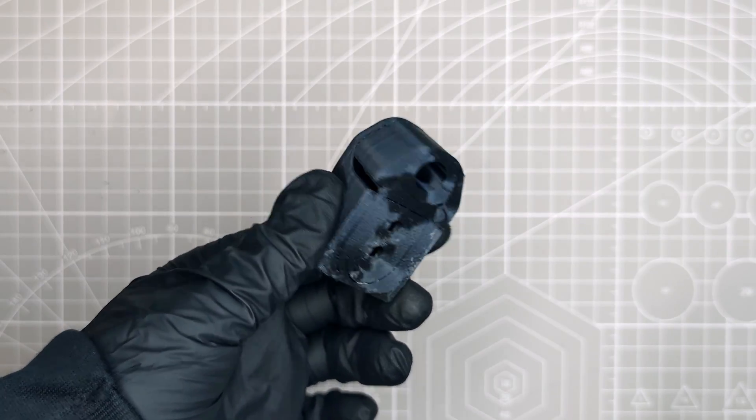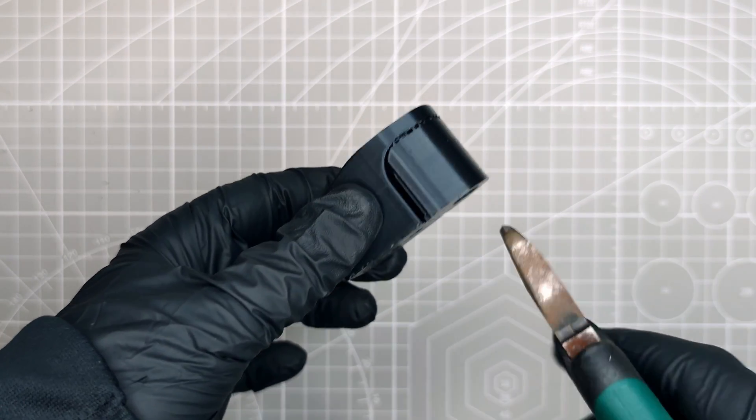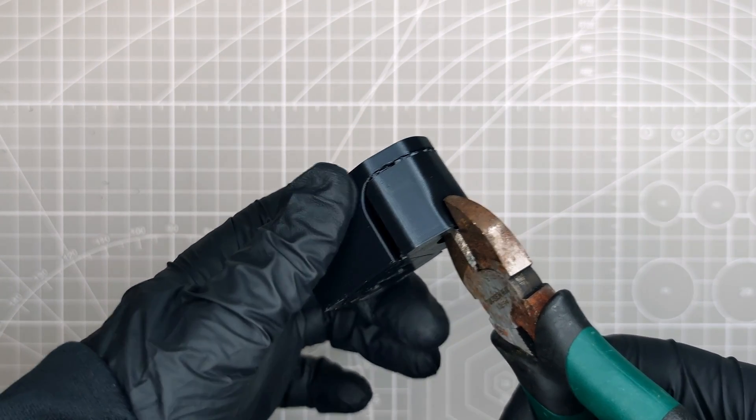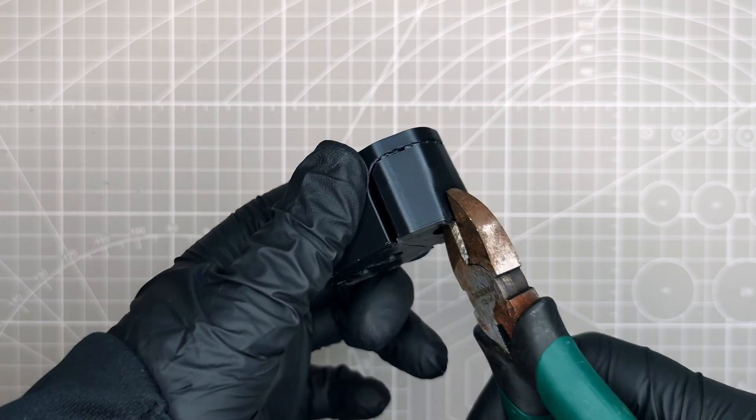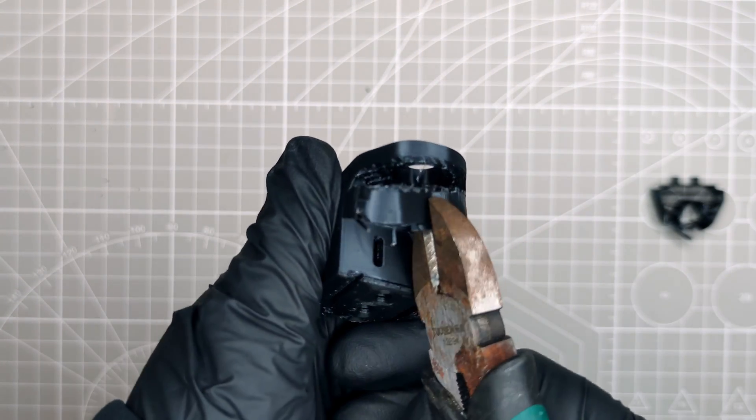We need to clean up the printed parts by first removing the support material. On the shifter's base, there is only one support piece, but it's pretty big. I will use some wire cutters to first break the lower part that also includes the channels for the wires. I still need to remove the remaining support at the top, below the arm of the base.